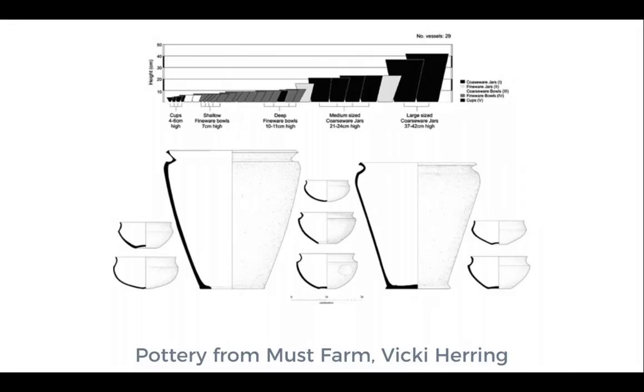This is another illustration — pottery from Must Farm by Vicki Herring. I wanted to show this because it looks very similar to the illustration from the 1600s we saw earlier. We are looking at the pottery straight on at a very direct azimuth, with the pots placed next to each other on a plane, so we can easily compare their shapes and rim sizes and immediately identify what pottery chronologies they belong to.